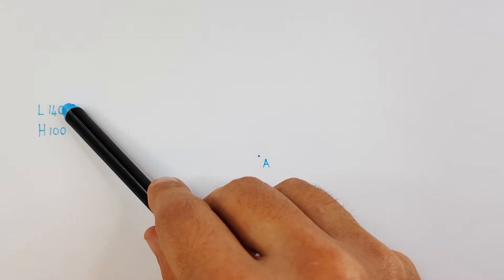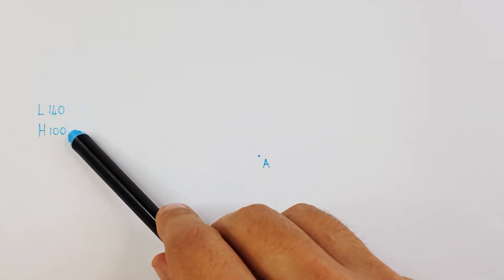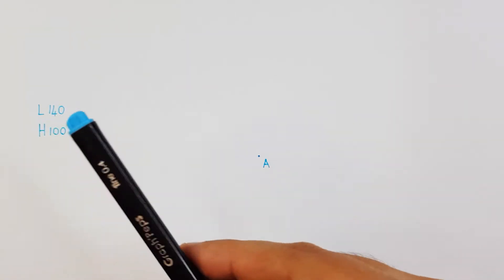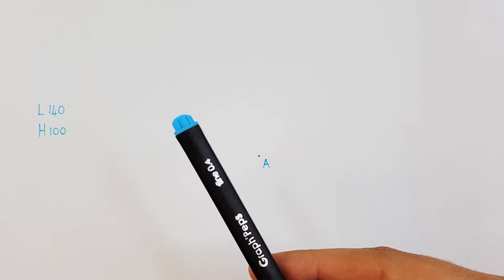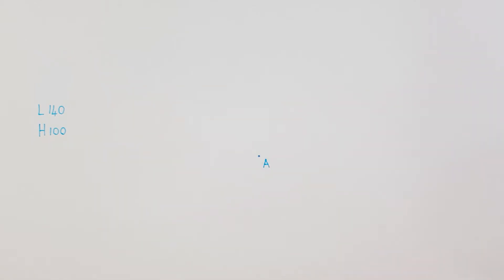Welcome back to another EGD video. In today's video I'm going to show you how to draw an ellipse. I will be using point A as the middle point of my ellipse as well as a major axis of 140 and a minor axis of 100. And as always I'm using a blue pen to show my construction lines.